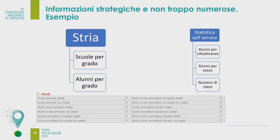Un esempio di informazioni strategiche e non numerose: i dati sulla scuola. Ci sono molte informazioni nel database del MIUR, ma abbiamo scelto solo le scuole per grado, gli alunni per grado, gli alunni stranieri, gli alunni per cittadinanza, per sesso e il numero di classi. Se uno vuole approfondire l'argomento scolarità va su Statistica Self-Service. In una banca dati di carattere generale come STRIA questo è sufficiente, sempre per evitare la bulimia di informazioni.